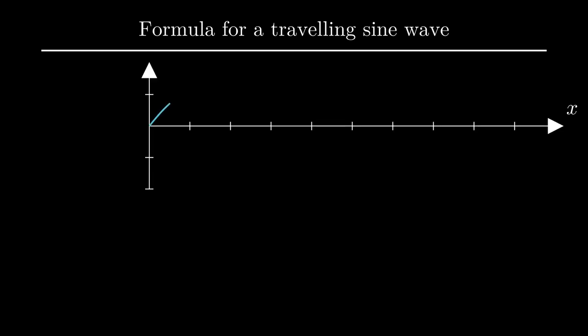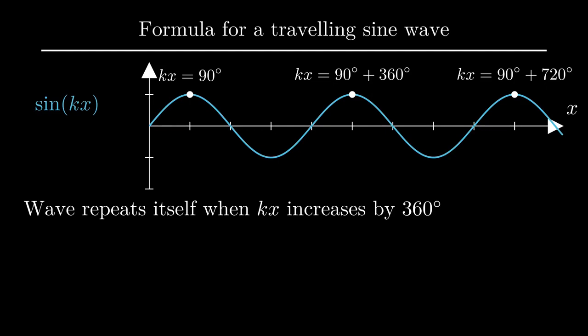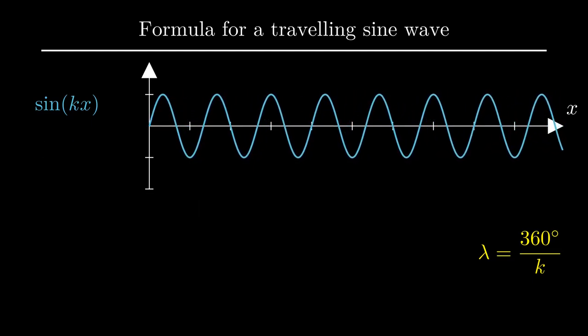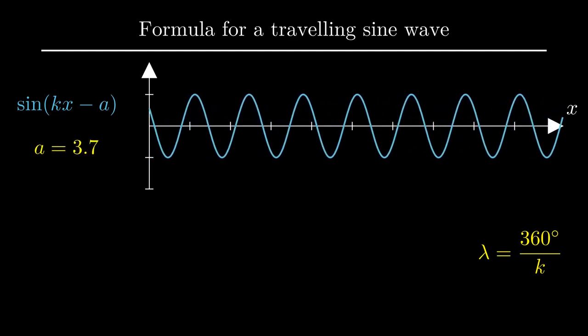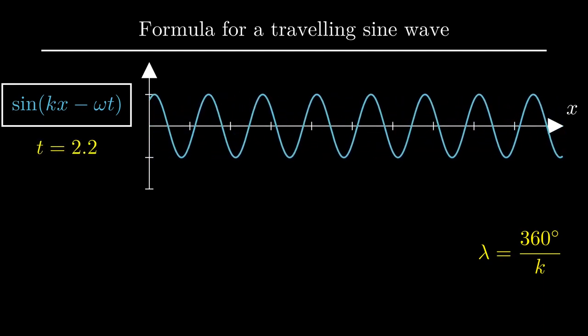Waves of a pure wavelength are often called sine waves, because their shape is described by a sine function. The constant k, called a wave number, determines the wavelength. The sine function will give the same value if kx increases by 360 degrees, or 2π if you prefer radians, equivalently if x increases by 360 degrees divided by k. This means that the wave repeats itself every time we move a distance of 360 over k. This is the wavelength. In particular, a bigger value of k leads to shorter waves. If we change the argument of the sine function by some number a, the whole profile shifts. If this number increases in time, we get a moving wave. Writing the number a as omega times t, where omega is a constant and t is time, we get the formula for a moving wave. Omega is called the angular frequency of the wave, or simply the frequency.